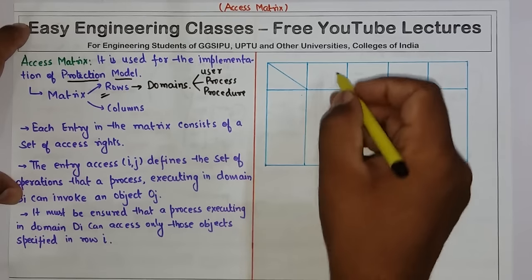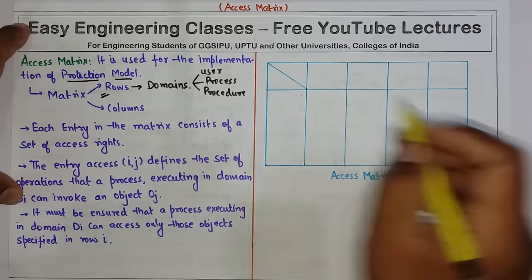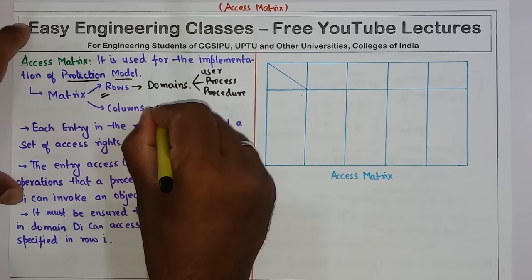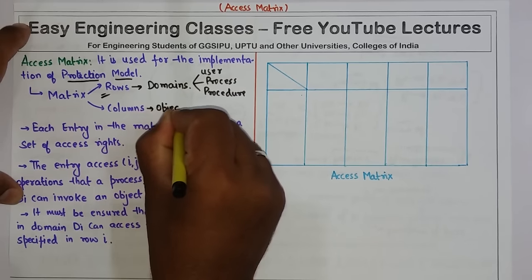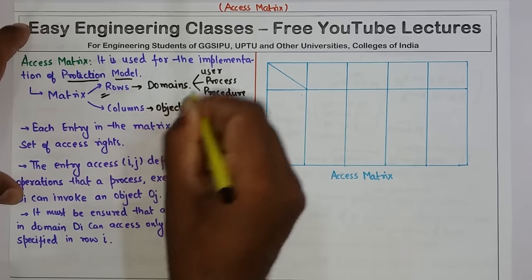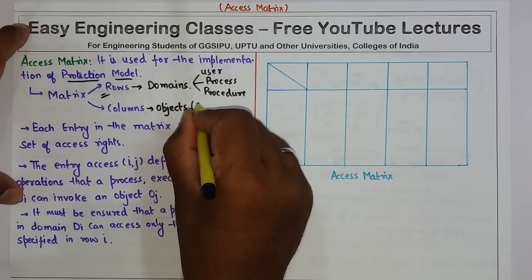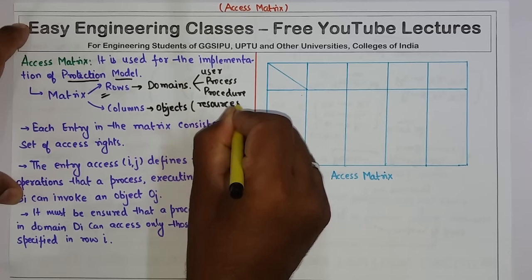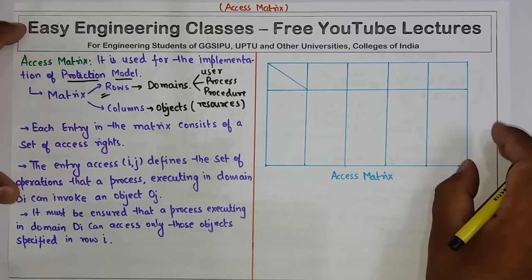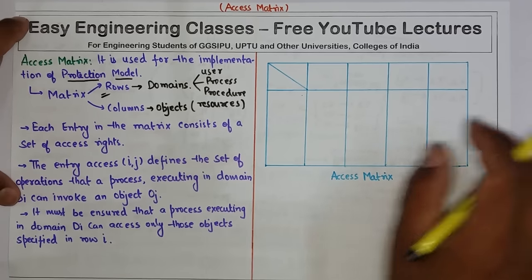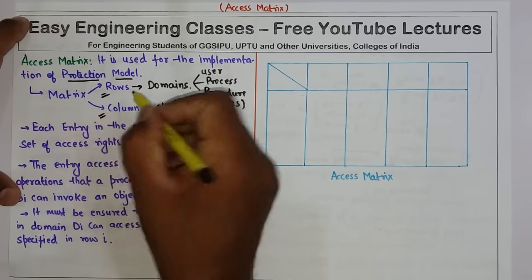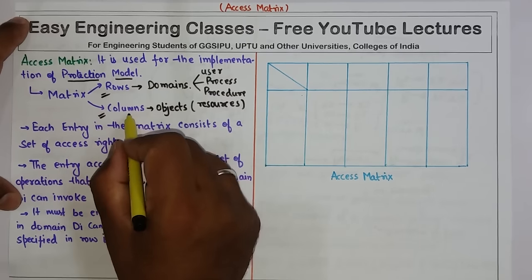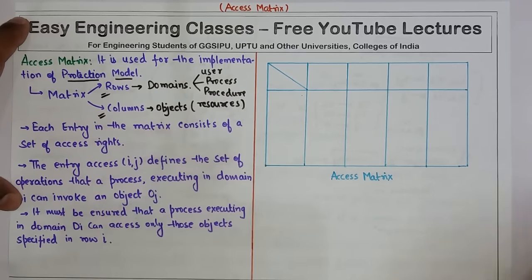Then there are columns. These columns are representing the objects, and these objects are actually the resources that are present in any operating system. So clearly there are two different entries — one is rows representing domains and another is columns representing objects.